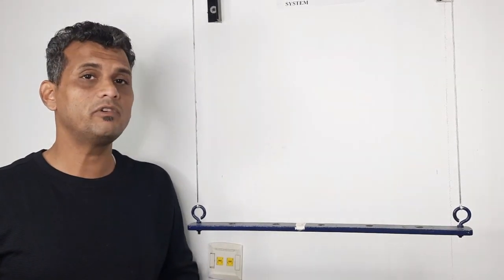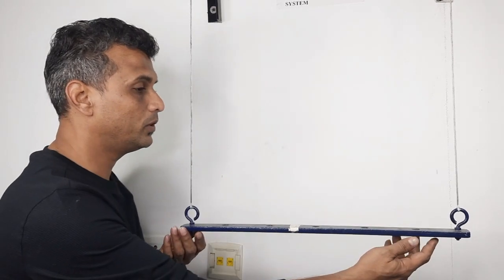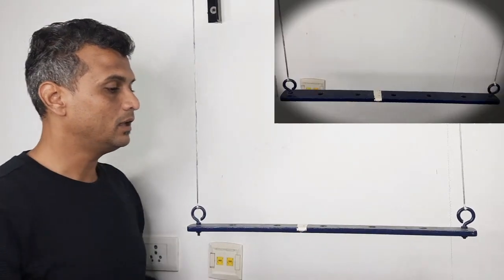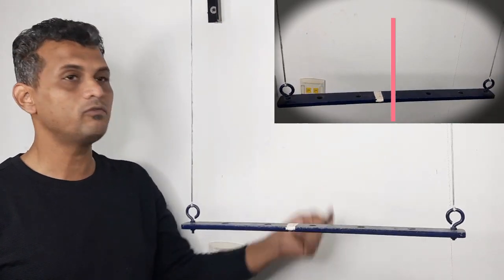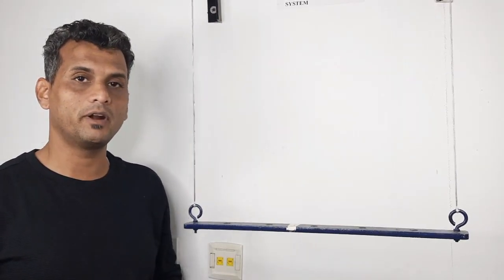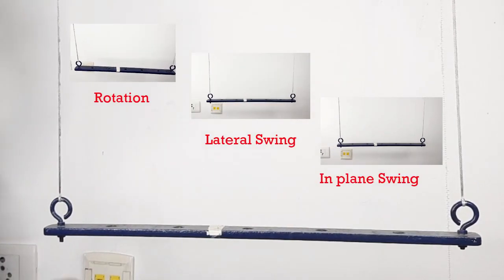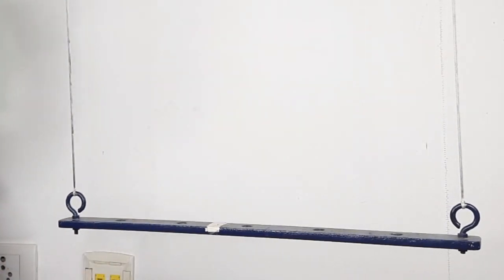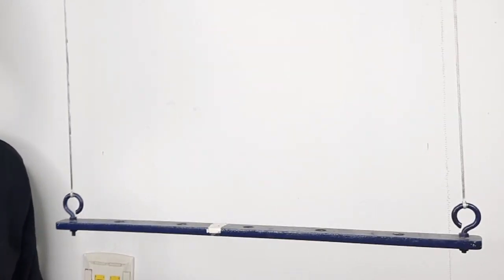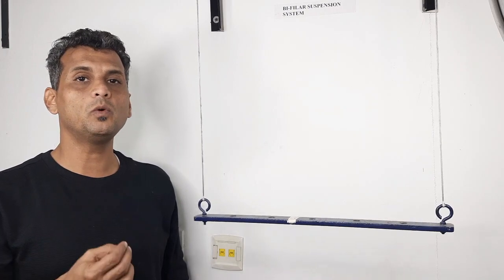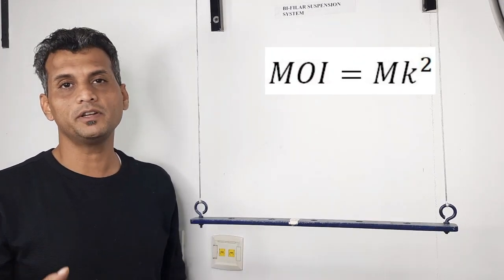Do you think the system will have any other degree of freedom? Yes. If I give a rotation to the bar, the bar will oscillate about this axis of rotation. So this is another degree of freedom. I can conclude that the system will have three degrees of freedom, and the last one — rotational — is what we are going to use to measure the radius of gyration. And if we know the mass of the body, we will be able to get the moment of inertia.